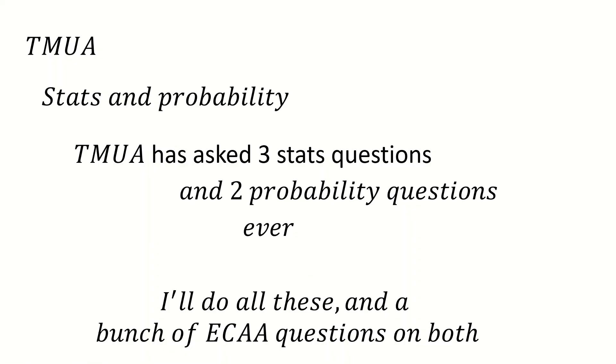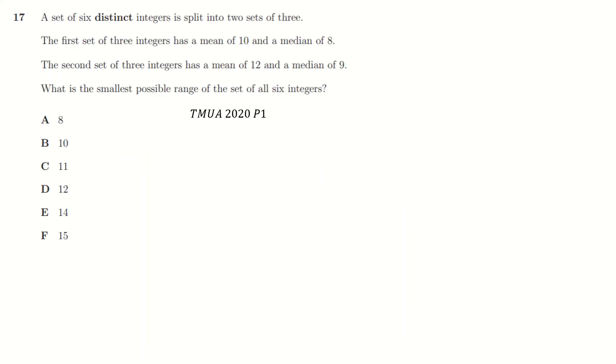I can't imagine you'll see much of this on Tuesday, but you might see some, so it might be worth going through anyway. So we'll start with some Tamura stuff. All the codes will be in here somewhere so you can find the question and look it up. We've got a set of distinct six integers split into sets of three, so there's three there and three there.